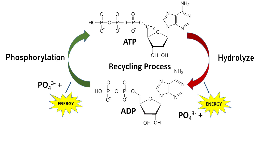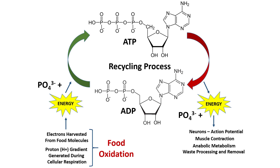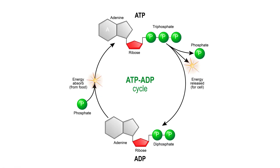To add a phosphate molecule back and convert ADP into ATP requires energy input, and that energy comes from food. We can't meaningfully store ATP, but we can easily store food substrates such as carbohydrates and fat. The energy released from food powers action potentials from the nervous system, muscular contraction, and all biological processes — cycling continuously between ATP and ADP.